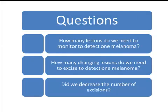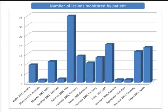Several questions arise regarding monitoring: How many lesions do we need to monitor to detect one melanoma? How many changing lesions must we excise to detect one melanoma? And — most importantly — did we decrease the number of excisions needed to detect one melanoma? In Australia, studies by Menzies and Altamura show a low number of lesions monitored per patient, because they prefer short-term monitoring dedicated to single lesions. Similarly, Argenziano in Italy also has a low number of lesions monitored per patient.